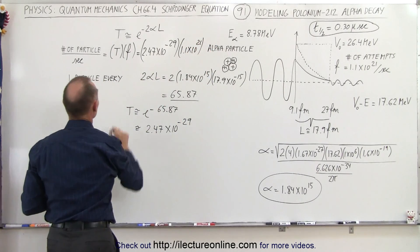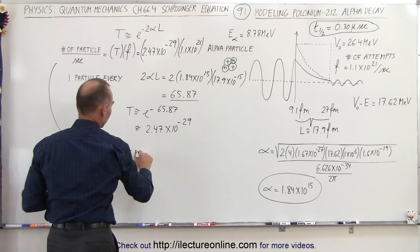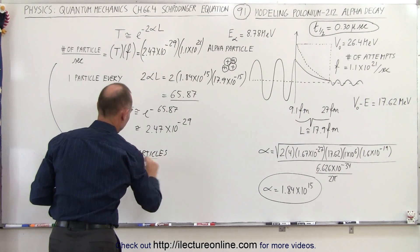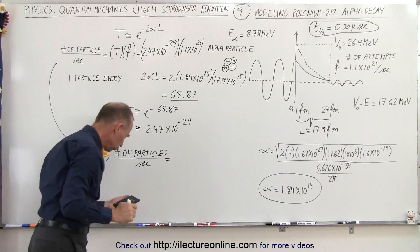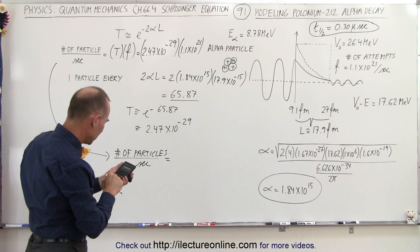2.47 × 10^-29 and multiply times the frequency of 1.1 × 10^21. So when we do that, we get the number of particles, in this case alpha particles per second, that will break through to be equal to...